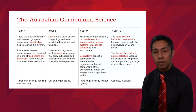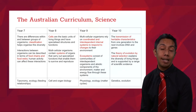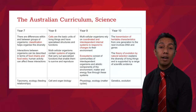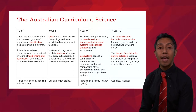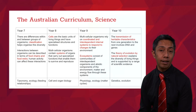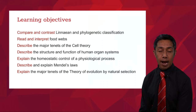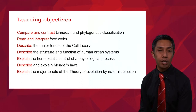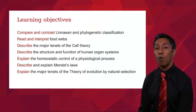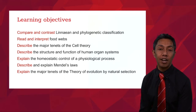We're also going to explain homeostatic control of physiological processes, describe Mendel's laws, and finish with the theory of evolution by natural selection by Charles Darwin. In planning this lecture, I looked at the Australian Curriculum for Science for years 7, 8, 9, and 10, highlighted key concepts from the content descriptors, identified those concepts, wrote learning objectives, and built the slides accordingly.